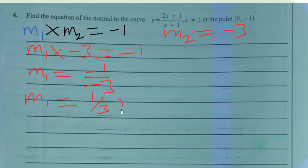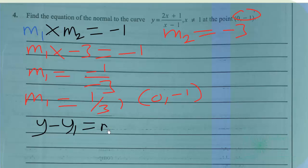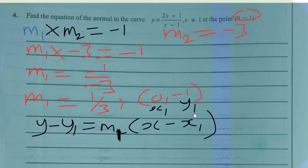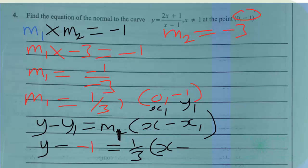With gradient 1/3 and the point (0, -1), we find the equation of the normal using y - y1 = m1(x - x1), where x1 = 0 and y1 = -1. So we have y - (-1) = (1/3)(x - 0).